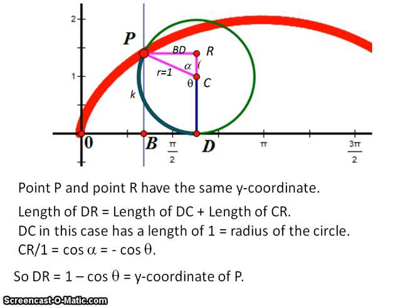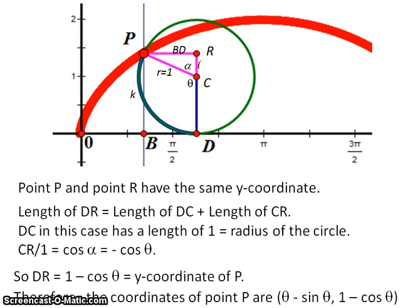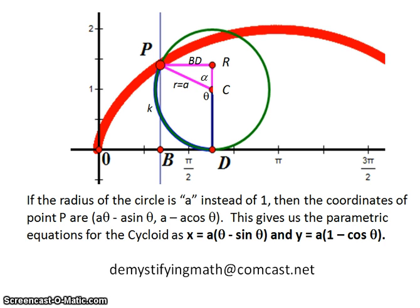So now we have the y-coordinate and the x-coordinate for point P in terms of theta. Now the only thing left for us to do is to make this more general. So instead of having a circle of radius 1, we have a circle of radius a.